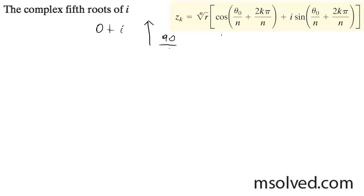Fifth roots: 90 divided by 5, which is 18 degrees, and then 360 divided by 5, which is 72. So we're going to start off, base case, 18 degrees, and this is going to go up by increments of 72 degrees.